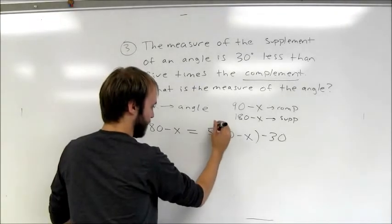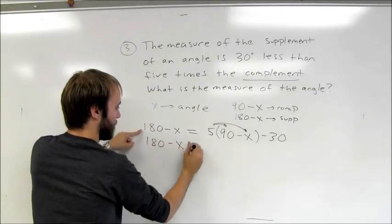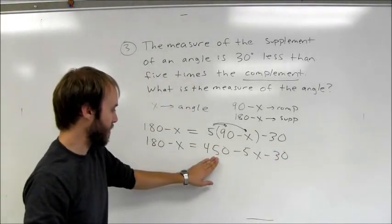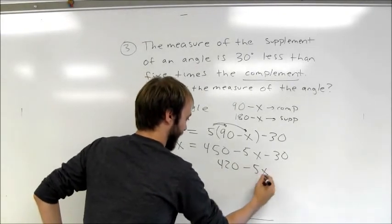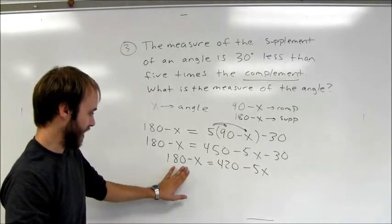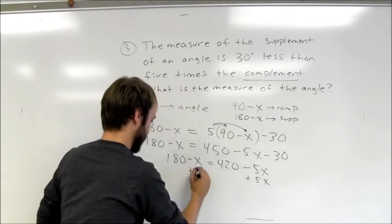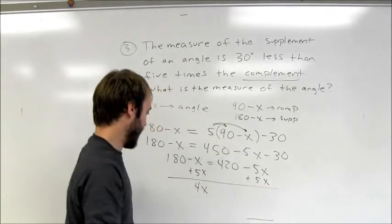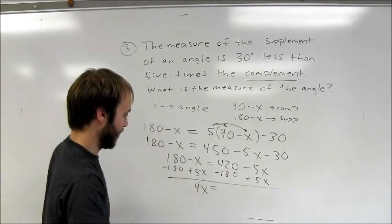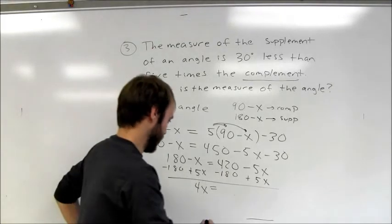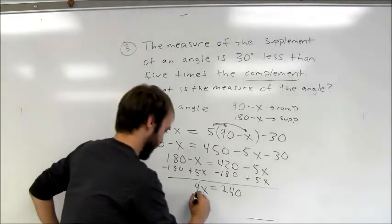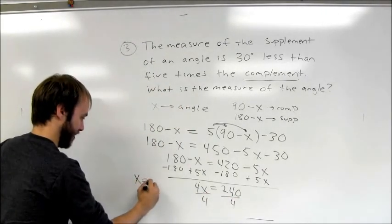Using the distributive property, I get 450 minus 5x minus 30, which simplifies to 420 minus 5x. To get variables on the same side, I add 5x to both sides, leaving 4x on the left. Then subtracting 180 from both sides gives 4x equals 240.